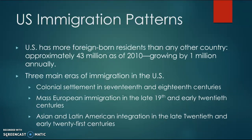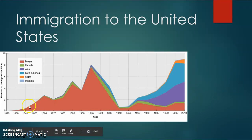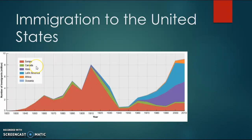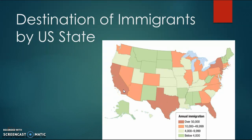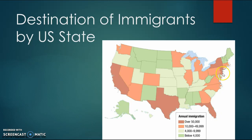This infographic shows how many people are moving from each country into the United States and where they're settling. Hispanic populations are settling largely in California, and Asian populations in Texas and Florida. New York is a big, highly populated hub. Not many people are settling in Wisconsin, the Dakotas, or Idaho.